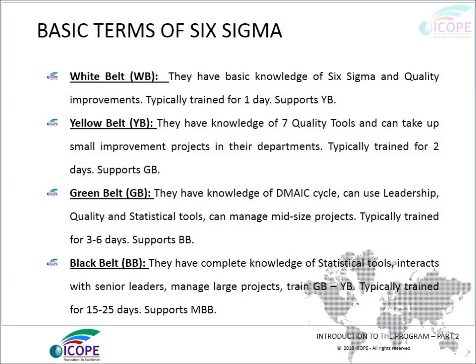What is a White Belt? They have basic knowledge of Six Sigma and quality improvements, are typically trained for one day, and support Yellow Belt projects. What is a Yellow Belt? They have basic knowledge of the seven quality tools, can take up small projects in their departments, are typically trained for two days, and support Green Belts.